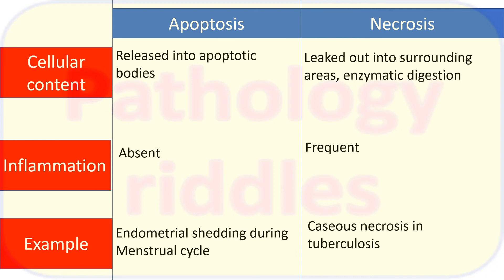In necrosis, cellular contents are leaked into the surrounding areas. Because apoptosis produces membrane-bound fragments, there is no inflammation. But in necrosis all cellular contents are released outside, so inflammation is present.